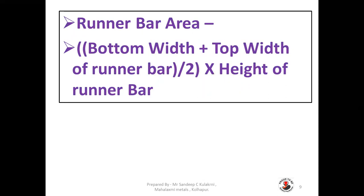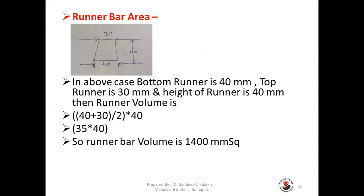Now we go on to understand how to calculate runner bar area. The formula is: runner bar area = (bottom width of runner bar + top width of runner bar) ÷ 2, multiplied by height of runner bar. In this picture, the bottom runner is 40 mm, the top runner is 30 mm, and the height of the runner bar is 40 mm. So the runner bar area is (40 + 30) ÷ 2 × 40 = 35 × 40 = 1400 mm square.